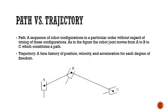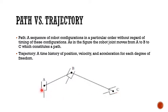Basically, the path is the geometry that the robot end effector should follow — the geometric path that the end effector should follow. For example, the end effector has to move from point A to B and to C. That is basically the path.